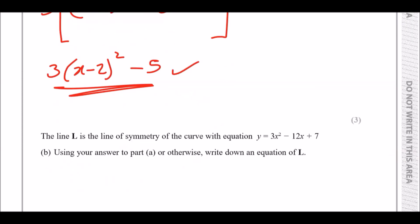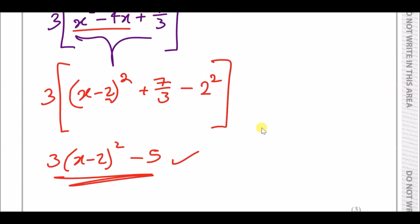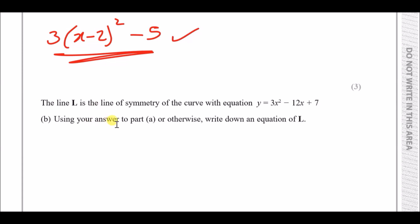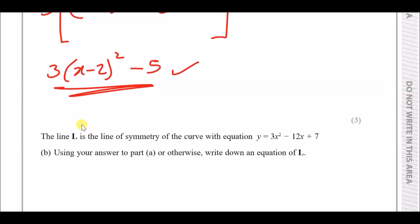Part b: the line l is the line of symmetry of the curve from part a. Using your answer to part a, write down an equation of l. Before we figure out the line of symmetry, let's sketch this curve because that will help us solve the question easily.